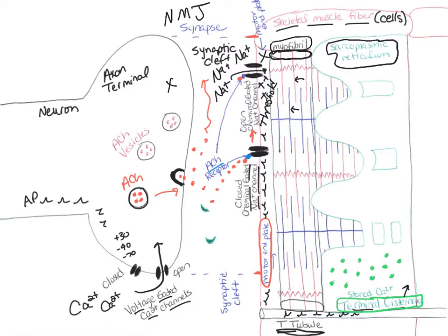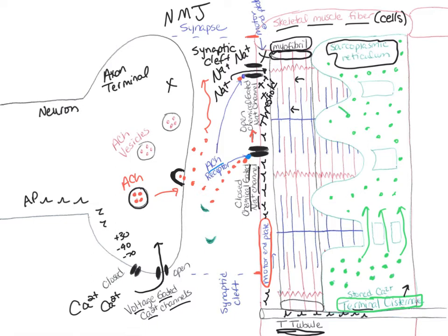When that action potential travels down the T-tubule and gets to the terminal cisternae, it stimulates the terminal cisternae to release all of those calcium molecules into the sarcoplasmic reticulum, covering the whole myofibril. The sarcoplasmic reticulum is permeable to calcium, which means calcium will diffuse from higher to lower concentration. Since it's at higher concentration inside the sarcoplasmic reticulum, it's going to diffuse out over the top of the myofibril.